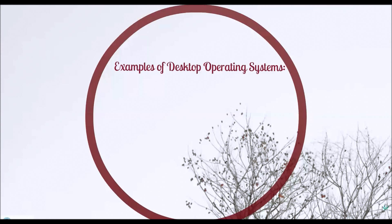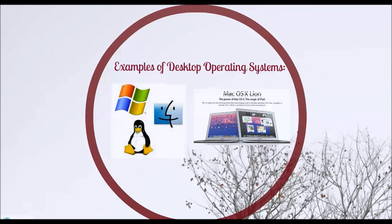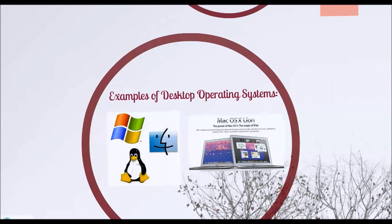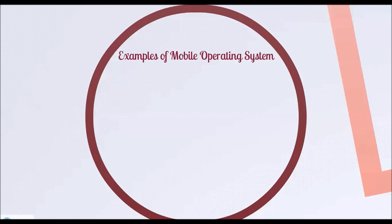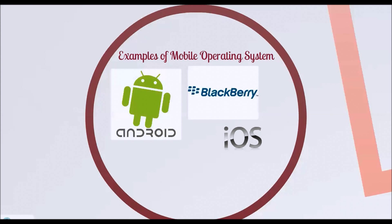The examples of Desktop Operating Systems are Mac OS X Lion, Windows Vista, Windows XP and Windows 7. The examples of Mobile Operating Systems are Android, BlackBerry, iOS and Symbian.